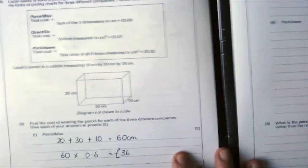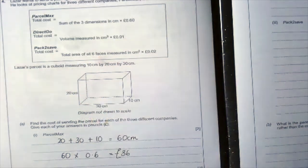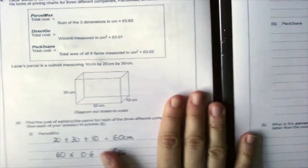Next part is Pack2Save. So it says the total area of all six faces and then you're going to times it by 2p.